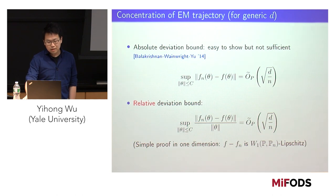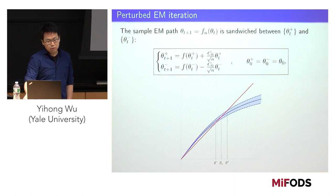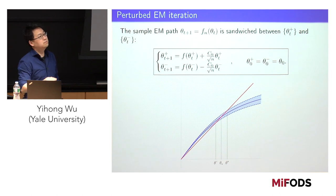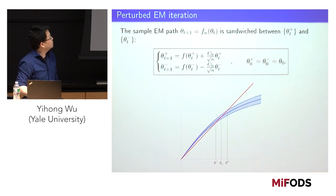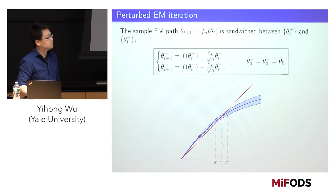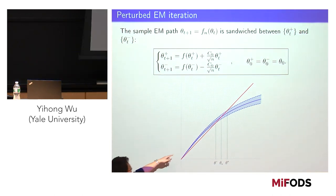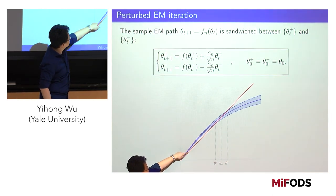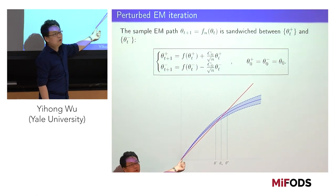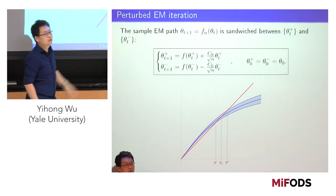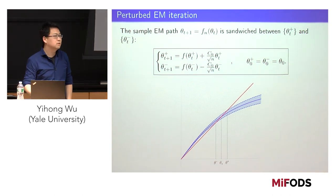Once you apply these results, you can lift the infinite-sample results to finite samples. The n-sample trajectory, regardless of where it is, is sandwiched between two dashed curves — perturbations of the population curve — and you're guaranteed to converge somewhere in between. The distance between these is exactly what you can hope for statistically. It's important to have the perturbation bound proportional to theta; otherwise a vertical shift could create a crossing that prevents convergence from low signal.